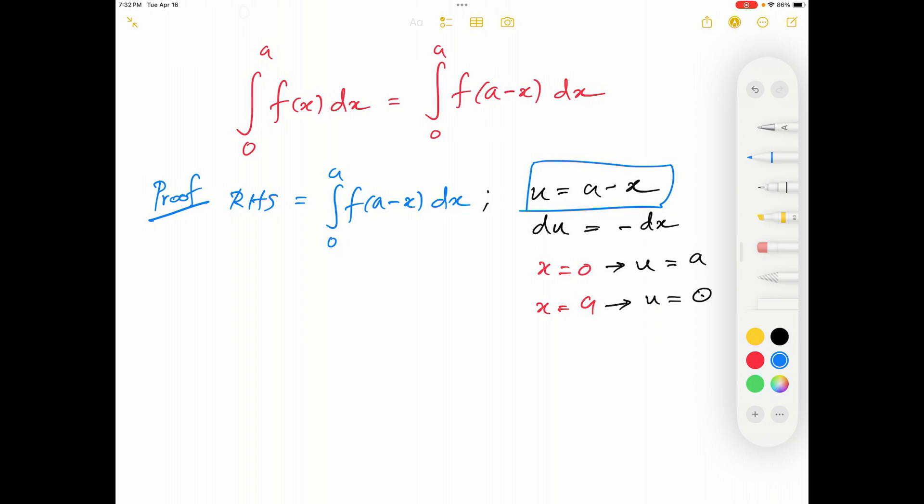Now I'm going to use that new variable in this integral. Integration. It was earlier 0 to a. Those were the limits of x. Now those limits have been changed to a and 0 respectively. So this integration is going to be from a to 0. I have the function f. a minus x is equal to u. f of u.